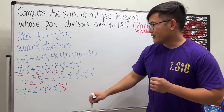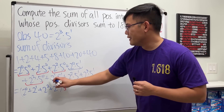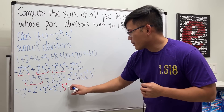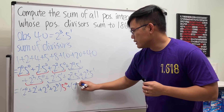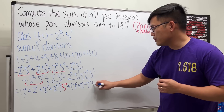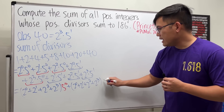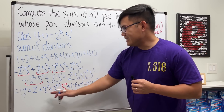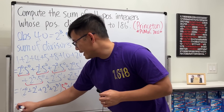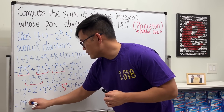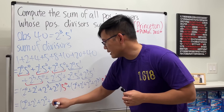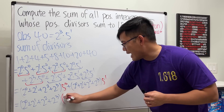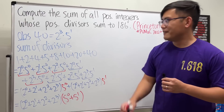Doing the same for the terms with 5¹, we get (2⁰ + 2¹ + 2² + 2³) × 5¹. Combining, the full factored form is (2⁰ + 2¹ + 2² + 2³)(5⁰ + 5¹). Very nice.